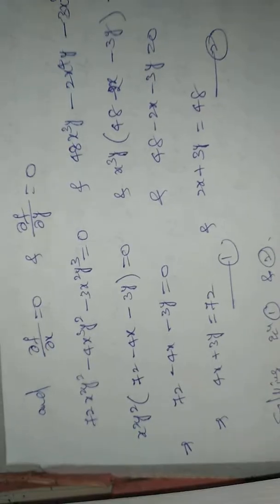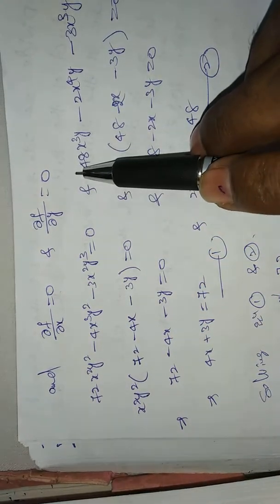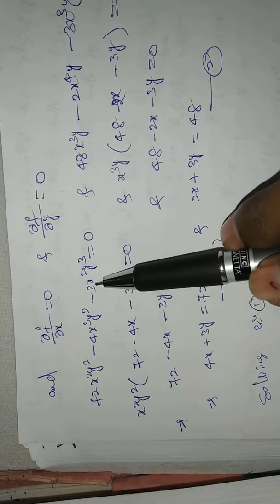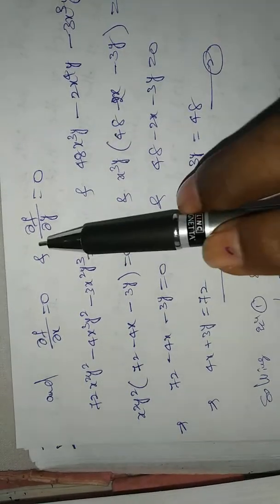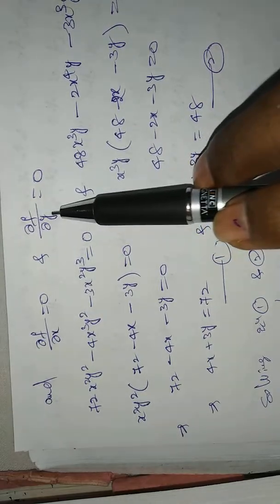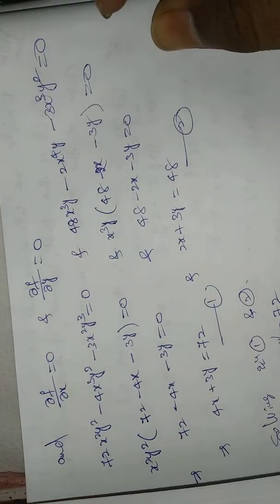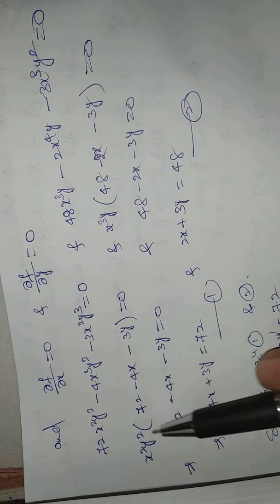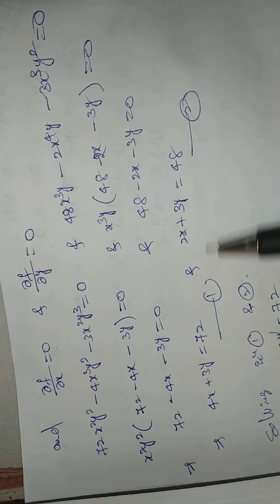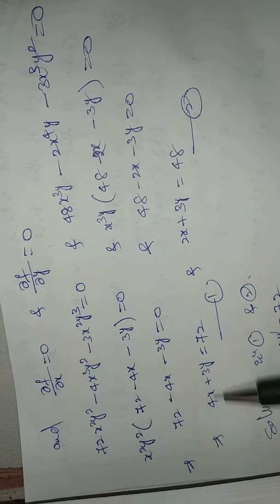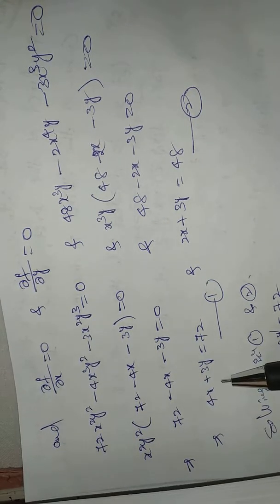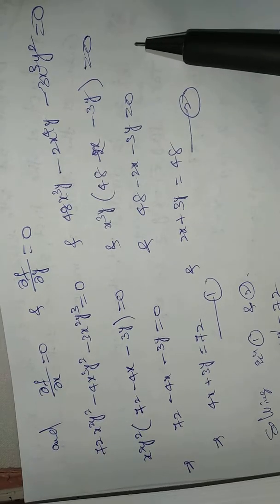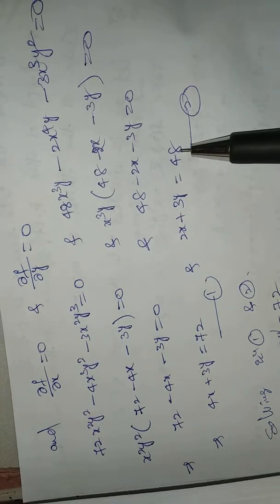Setting ∂f/∂x equal to zero: 72x²y² minus 4x³y² minus 3x²y³ equals zero. Factoring out x²y², we get 4x plus 3y equals 72 — equation 1. Setting ∂f/∂y equal to zero: 48x³y minus 2x⁴y minus 3x³y² equals zero. Factoring gives 2x plus 3y equals 48 — equation 2.